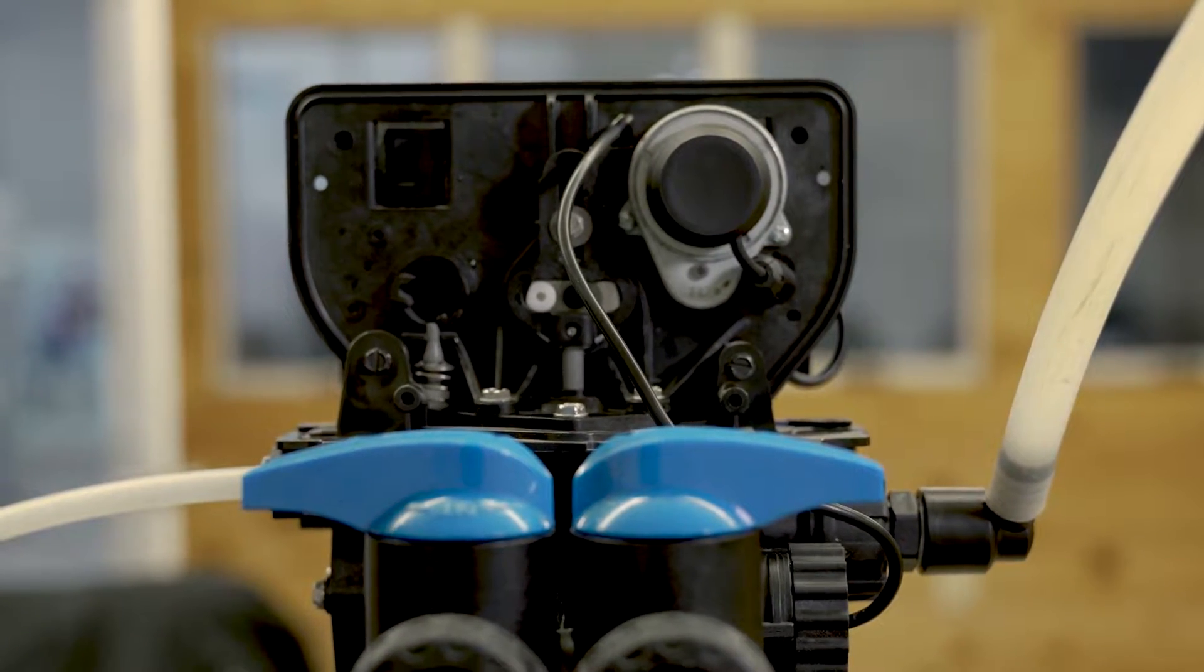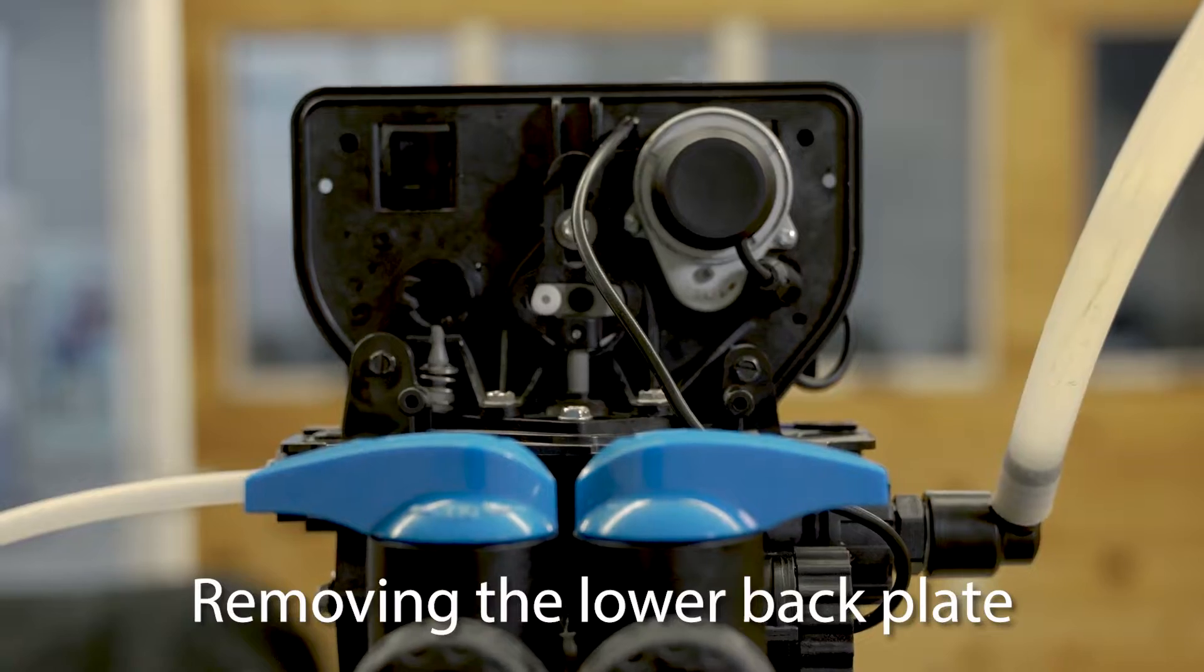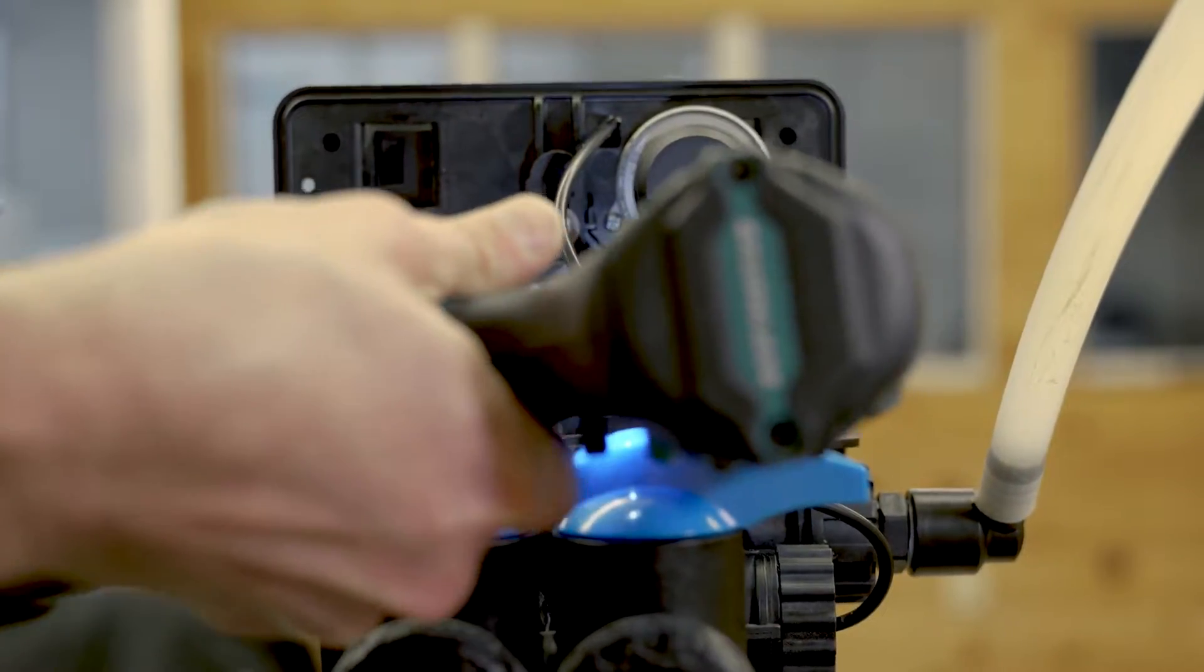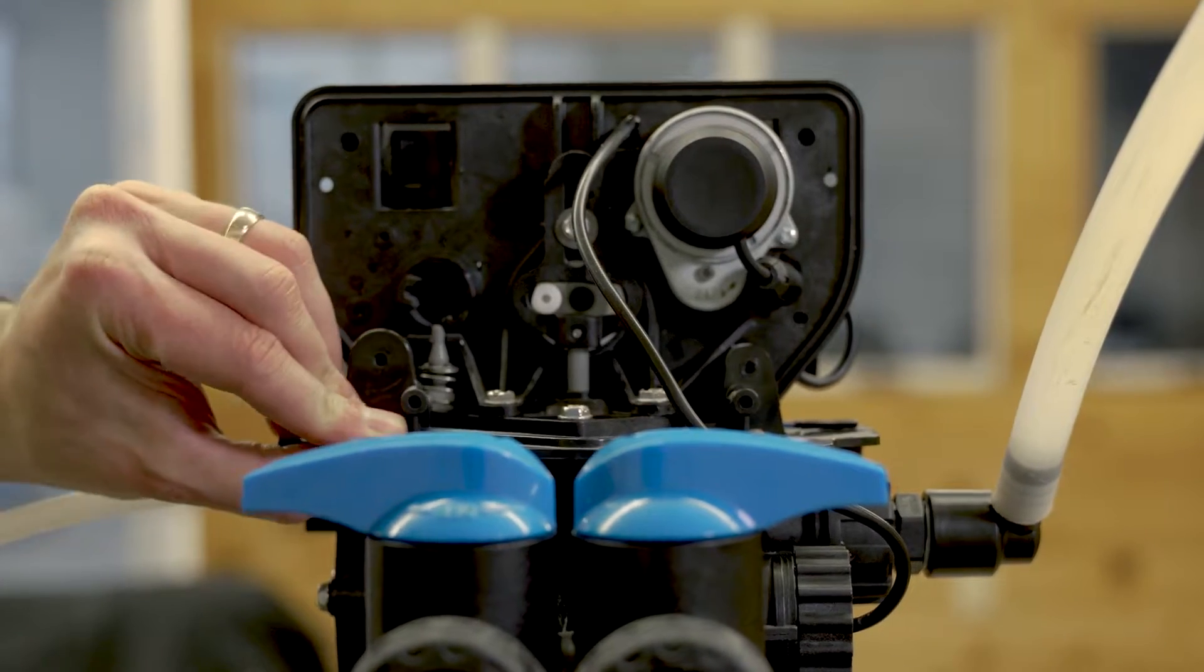The first two screws you're going to want to remove are these two that hold on the lower back plate. Then you can remove the lower back plate.